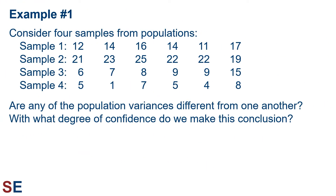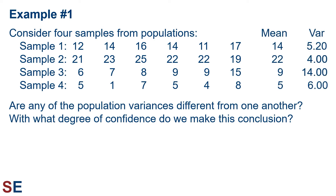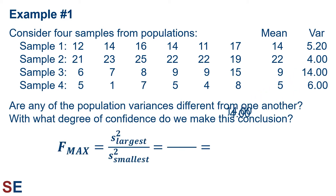For our first example, let's think about four samples, each of which have six values from their populations. The questions we will ask are: are any of the population variances different from one another, and with what degree of confidence do we make this conclusion? The first step is to calculate the means and variances for each sample. Then we calculate the Fmax ratio, putting the largest of the four values in the numerator and the smallest in the denominator. For our data, this ends up being 14 divided by 4, which gives us an Fmax value of 3.5.